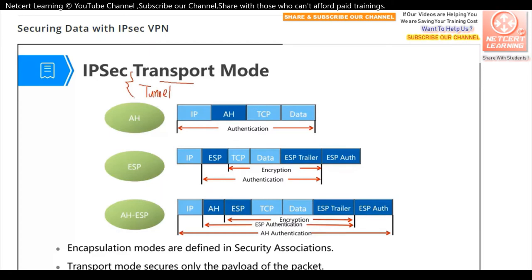IPSec VPN has two security protocols: AH and ESP. AH can only do authentication. In transport mode with AH, we insert the AH header between the IP header and the TCP header. The AH will authenticate this data, so the receiver can determine whether the data is the original or has been modified by hackers.